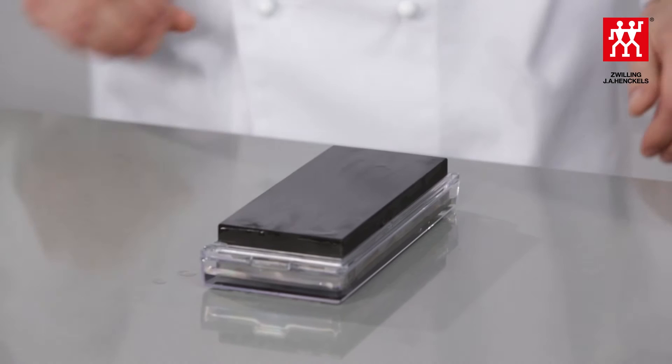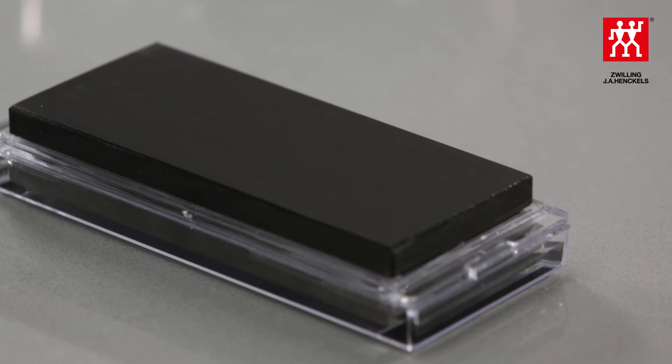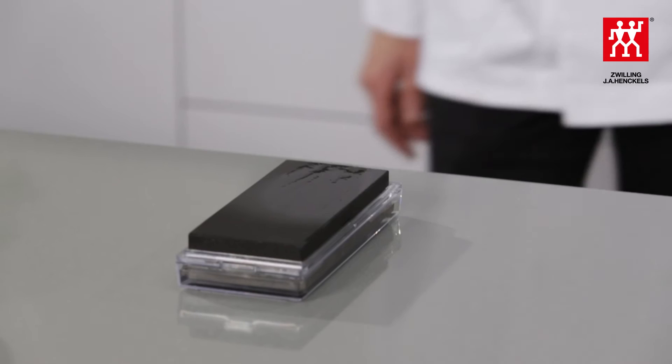Then, place the fine-grained side back into the tray. First, grind the blade with the coarse-grained side of the sharpening stone. There are different ways of drawing the blade over the stone. We're going to show you one method that is easy to learn.